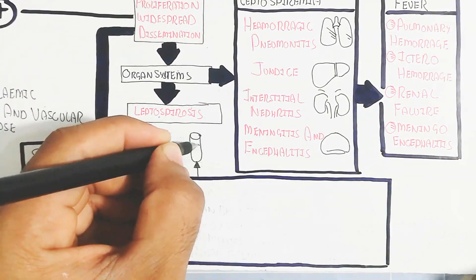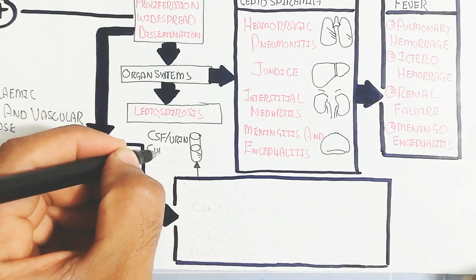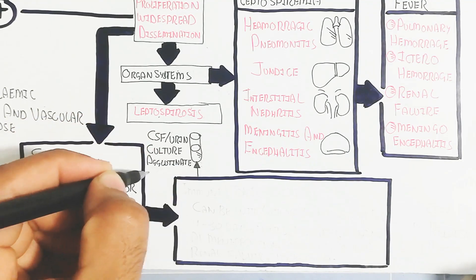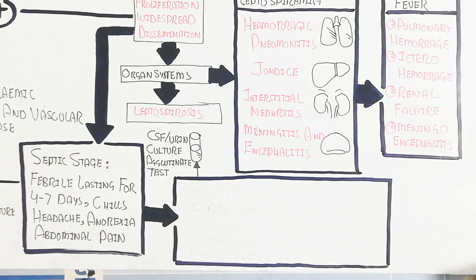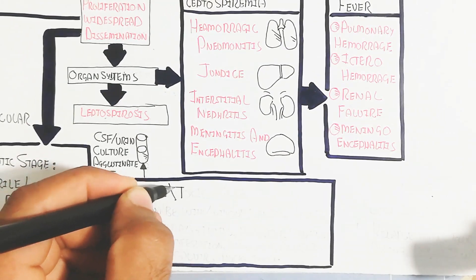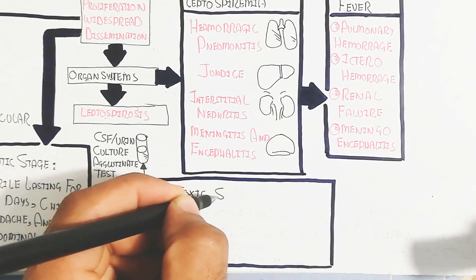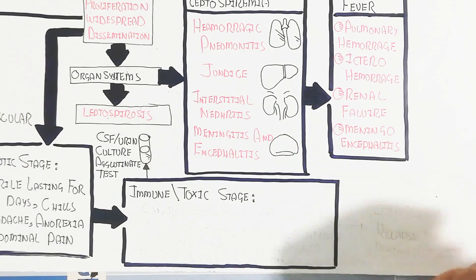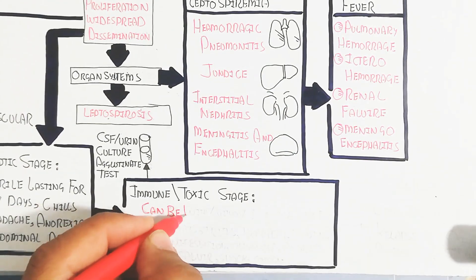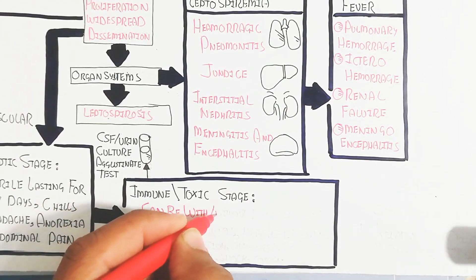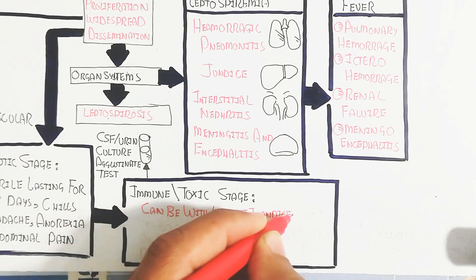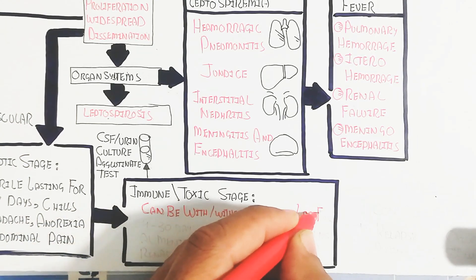Further into the septic stage, the immune and toxic stage leads to cerebral spinal fluid and urine culture, and agglutination tests. The immune and toxic stage can occur with or without jaundice and lasts for four to thirty days.